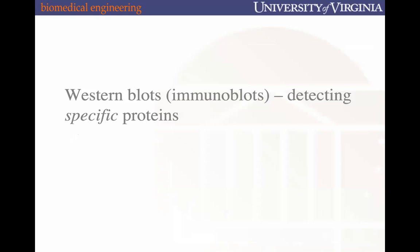We're going to pick this up next class and talk about Western blotting and how we can detect specific proteins. For the 2D gel, it's two different steps — you run the isoelectric focusing experiment and have the gel separated by pH, then you take that gel, lay it on top of a PAGE gel, and run it to separate by mass. You guys have a good weekend.